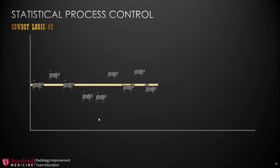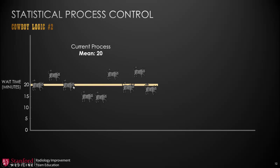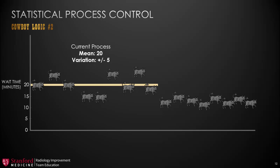Now let's move on to cowboy logic number two. Once again, we have the cattle representing our different data points and our average or mean shown on the chart. Let's take the example of wait time — say we wish to decrease wait time for a certain project. Currently, our process has a mean of 20 minutes. If we just told someone the mean is 20 minutes, is that being true to what the process is really doing? Not exactly. The voice of the process includes both the mean and the variation. So we'd say our process has a mean of 20 minutes with a variation of plus or minus 5 minutes.